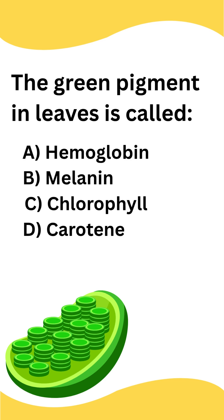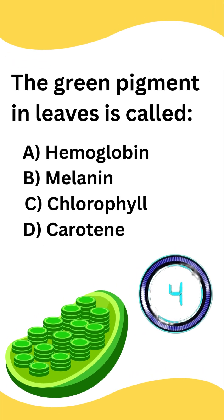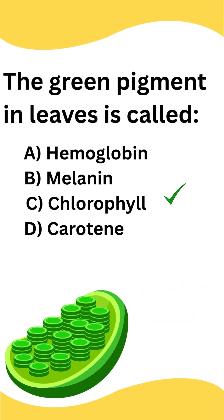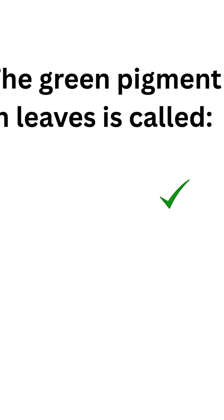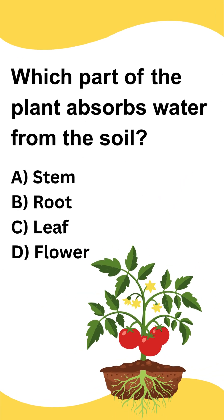The green pigment in leaves is called: A) Hemoglobin, B) Melanin, C) Chlorophyll, D) Carotene. The correct answer is option C: Chlorophyll.